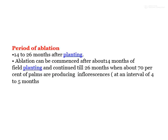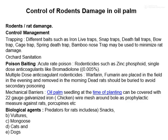The period of ablation is 14 to 26 months after planting. Ablation can commence after about 4 months of field planting and continue till 26 months, when about 70 percent of palms have produced inflorescence, at an interval of 4 to 5 months.